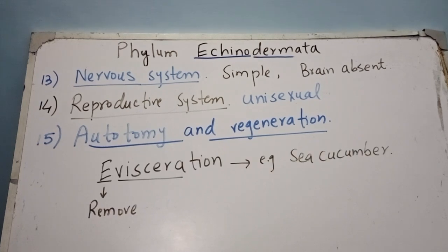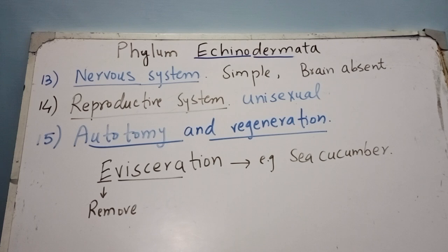A more advanced feature is evisceration, which occurs in sea cucumbers. 'E' means remove and 'viscera' means the soft organs present in the abdominal cavity, such as the stomach and intestine. In defense, when a sea cucumber is disturbed, it throws out its stomach or a part of its intestine through its body opening. The lost viscera are then regenerated. Evisceration is present only in sea cucumbers and is even more advanced than autotomy.